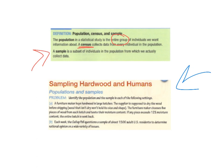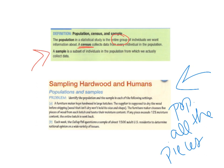In this problem we're identifying the population and the sample. A furniture maker is buying hardwood — the supplier is supposed to dry the wood before shipping. Wood that isn't dry won't hold its shape. The furniture maker chooses five pieces from each batch and tests moisture content. The population here is all the pieces of hardwood in that particular batch — not all hardwood that ever existed, just the hardwood in that specific batch going to this furniture maker.